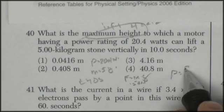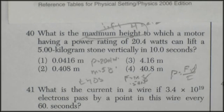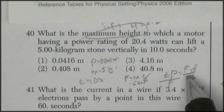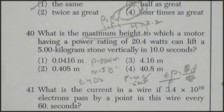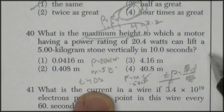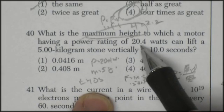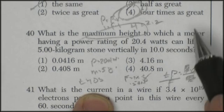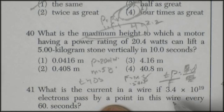Power equals force times distance over time. Power times time would be equal to force times distance. And power times time divided by force would be equal to my distance. So 10 times 20.4, so that's 204 divided by 50. So I'm looking at 4 something. Yeah.